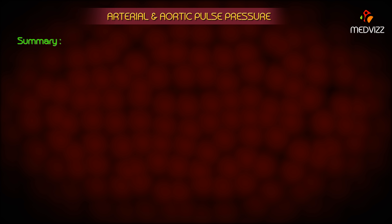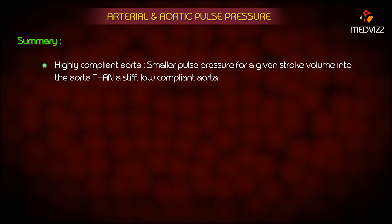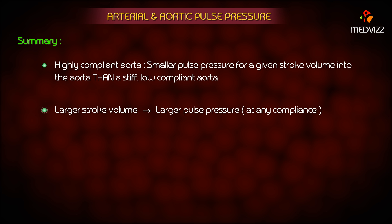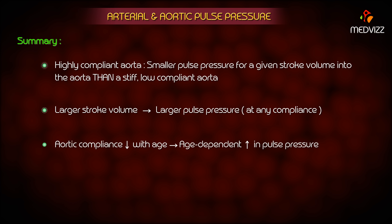Summary: A highly compliant, less stiff aorta has a smaller pulse pressure for a given stroke volume than a stiff, low-compliant aorta. A larger stroke volume produces a larger pulse pressure at any given compliance. Aortic compliance decreases with age due to structural changes, thereby producing an age-dependent increase in pulse pressure.